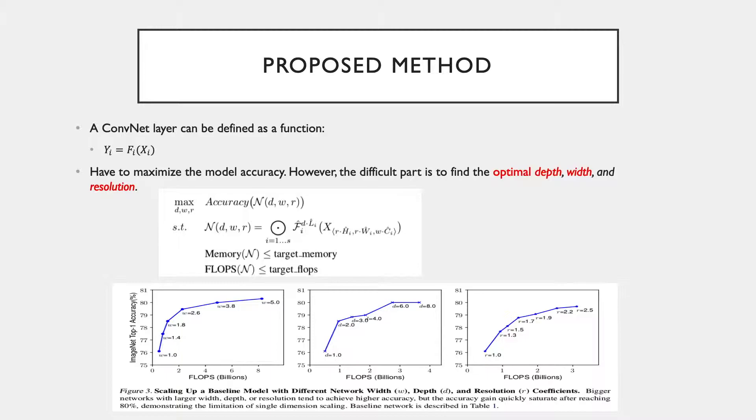As you may know, a convolutional layer can be defined as Y equals function of X, where F is the operator and Y is the output tensor. X here is the input tensor with a tensor shape of H, W, and C, where H and W are the spatial dimensions and C is the channel dimension.